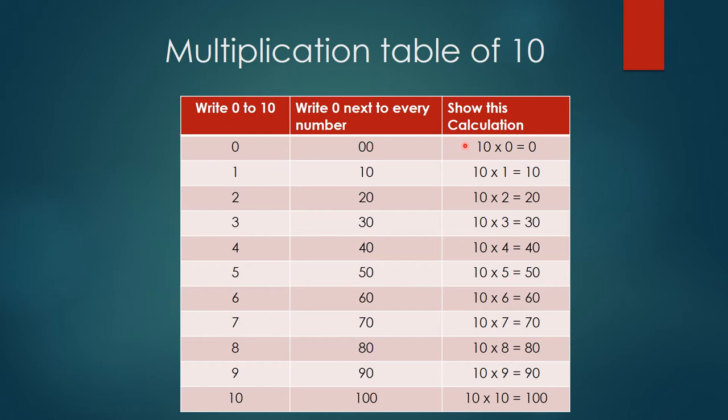Then show them the calculation: 10×0=0. Any number multiplied by 0 is 0. Then 10×1=10, 10×2=20, 10×3=30, 10×4=40, 10×5=50, 10×6=60, 10×7=70, 10×8=80, 10×9=90.